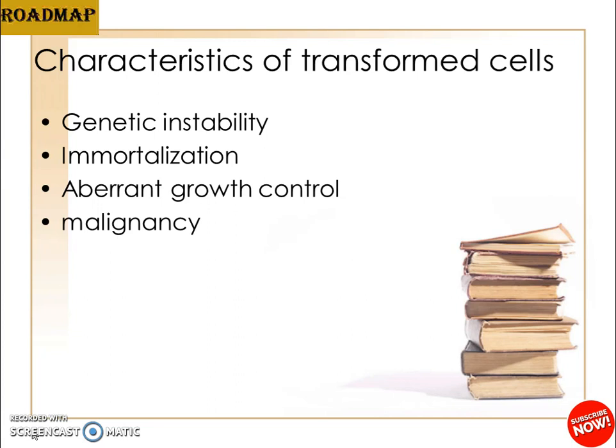Immortalization can also be achieved by telomerase induction. The most important cause of finite lifespan — senescence — is due to telomeric shortening followed by cell death, which is essentially apoptosis. If cells are transfected with the telomerase gene hTRT, the lifespan of the cells can be extended and a small portion of cells can become immortal.